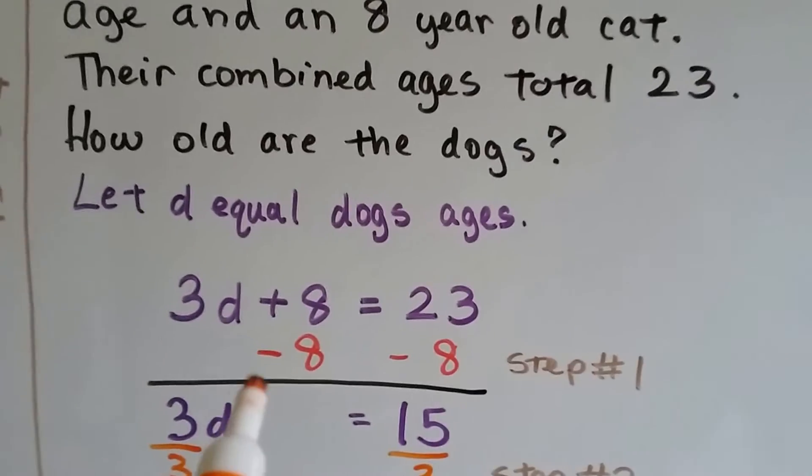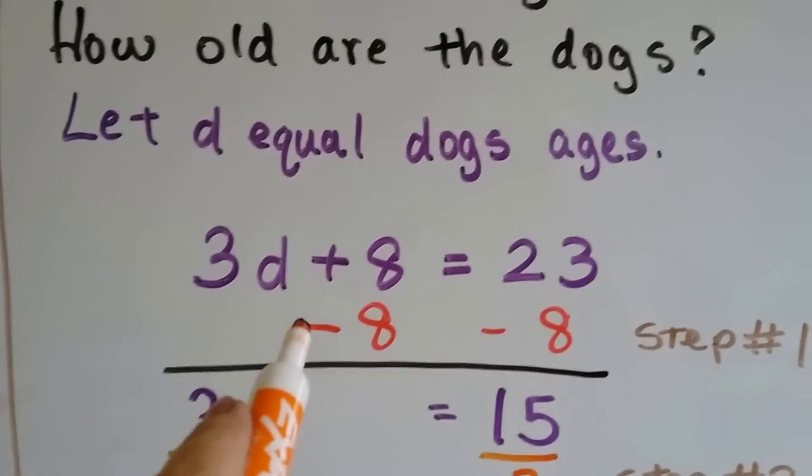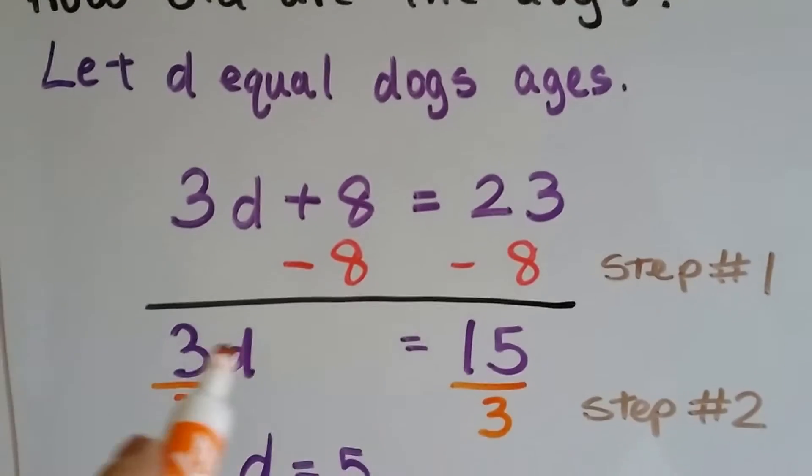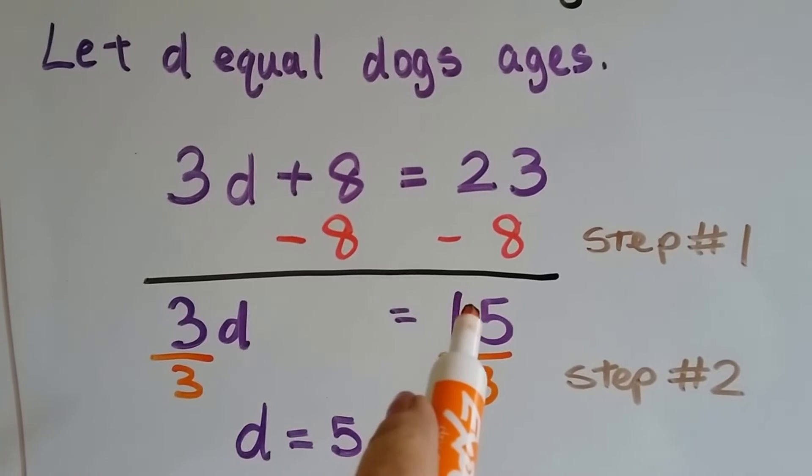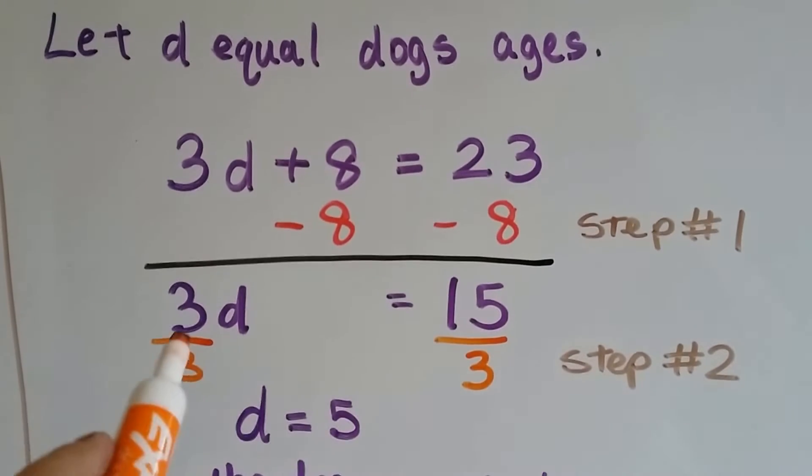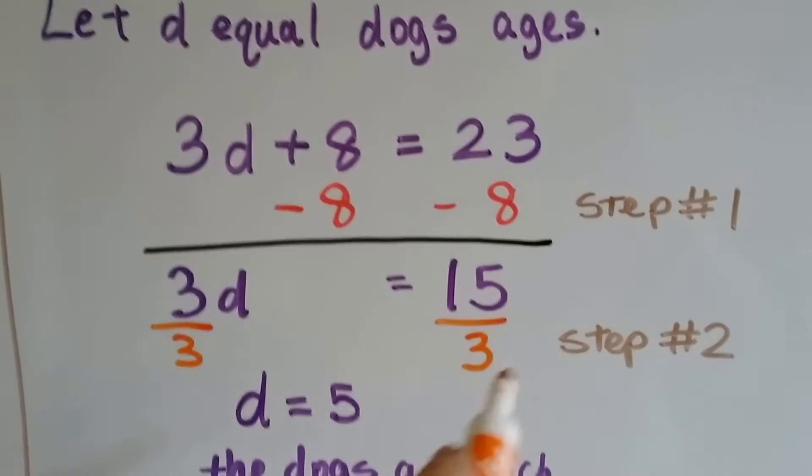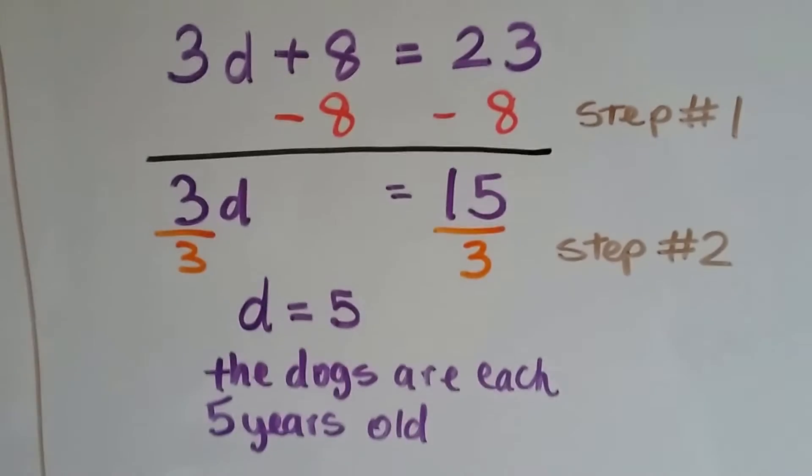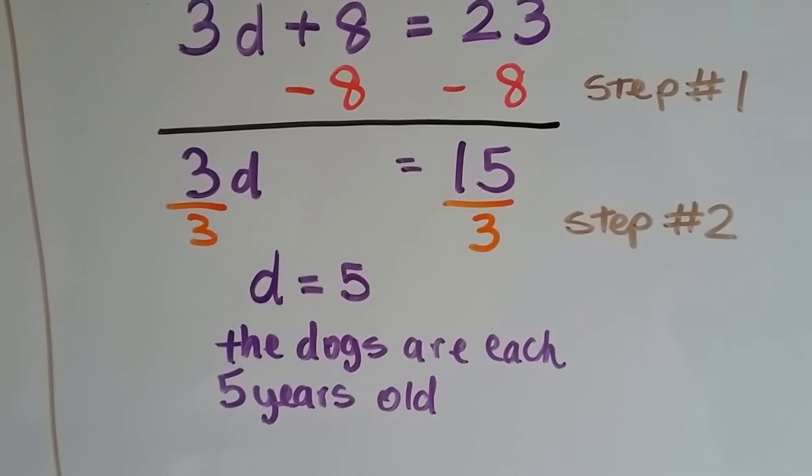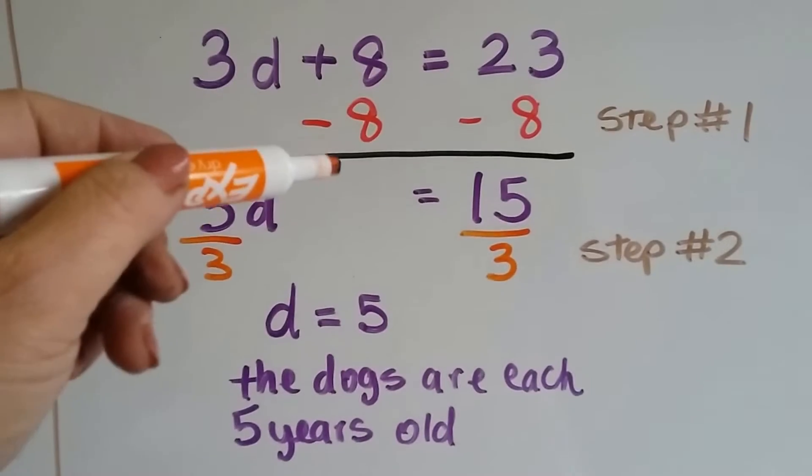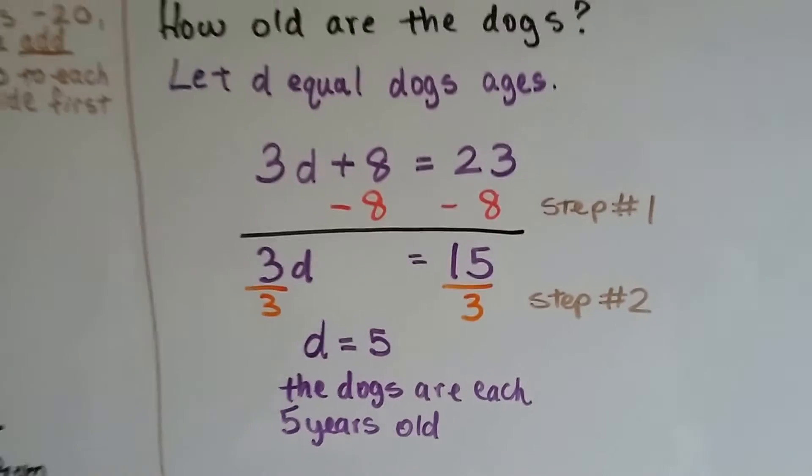Now if we subtract the years of the cat from each side, that's going to give us the 3 dogs will equal 15. We divide both sides by 3 and we see that the dogs are 5 years old each. Two-step equation. First we subtract it, then we divide it.